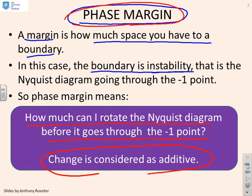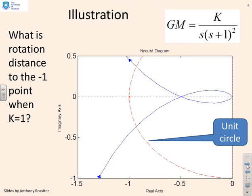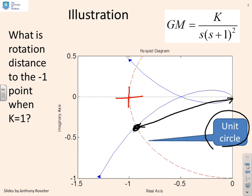Here's an illustration. We've got a Nyquist diagram for 1 over s(s+1)². We're asking ourselves: how much can we rotate this to make it go through minus 1? There's the minus 1 point. Now, if a pure rotation is going to go through minus 1, then we have to have a point that has a gain of 1. And that's this point here — we've marked it using the unit circle, so this point has a gain of 1.